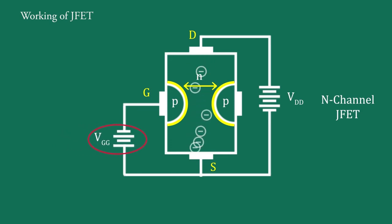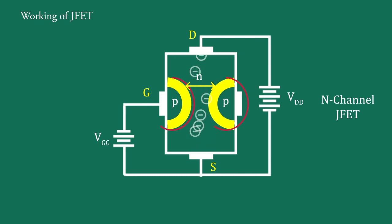When a reverse voltage is applied by battery VGG between the gate and source, the width of the depletion layer is increased like this. Hence, the width of conducting channel is decreased. Hence, the flow of electrons from source to drain is interrupted and therefore current is decreased.